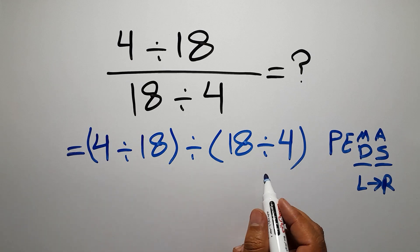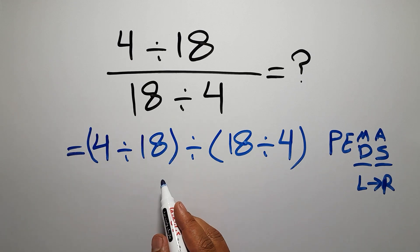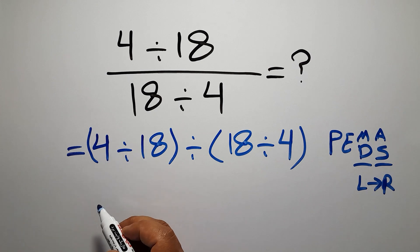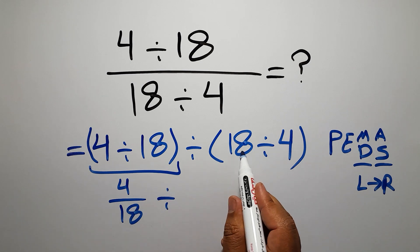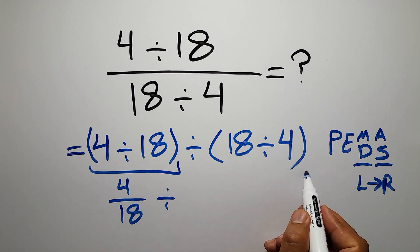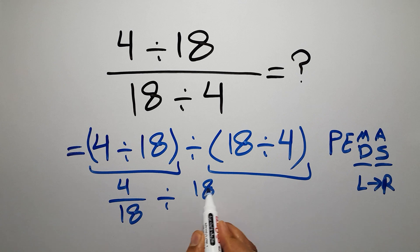So here, first we have to do these parentheses. 4 divided by 18, we can write as 4 over 18, and divided by 18 divided by 4, or 18 over 4. Now, this fraction divided by this fraction.